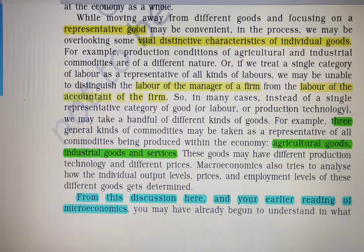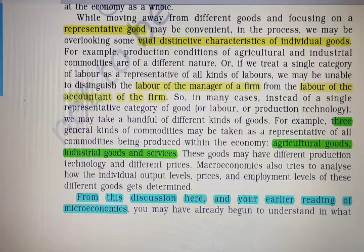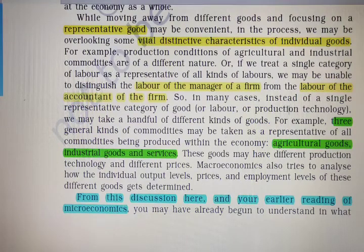These goods may have different production technology and different prices. Macroeconomics also tries to analyze how the individual output levels, prices, and employment levels of these different goods get determined — such as how the prices of agricultural goods, industrial goods, and services are determined in the market.